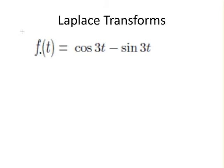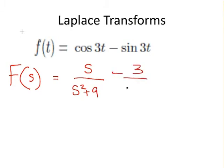Let's put this all together. The function of t is cos 3t minus sin 3t. So the corresponding Laplace transform of this function, F(s), is s over s squared plus 9 minus 3 over s squared plus 9. We would write that as s minus 3 over s squared plus 9.